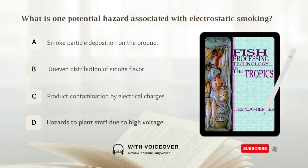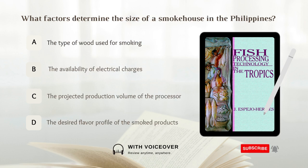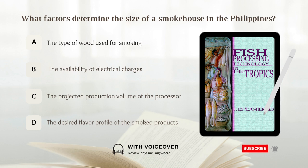What factors determine the size of a smokehouse in the Philippines? A. The projected production volume of the processor. D. The desired flavor profile of the smoke products. Answer: D. The projected production volume of the processor.